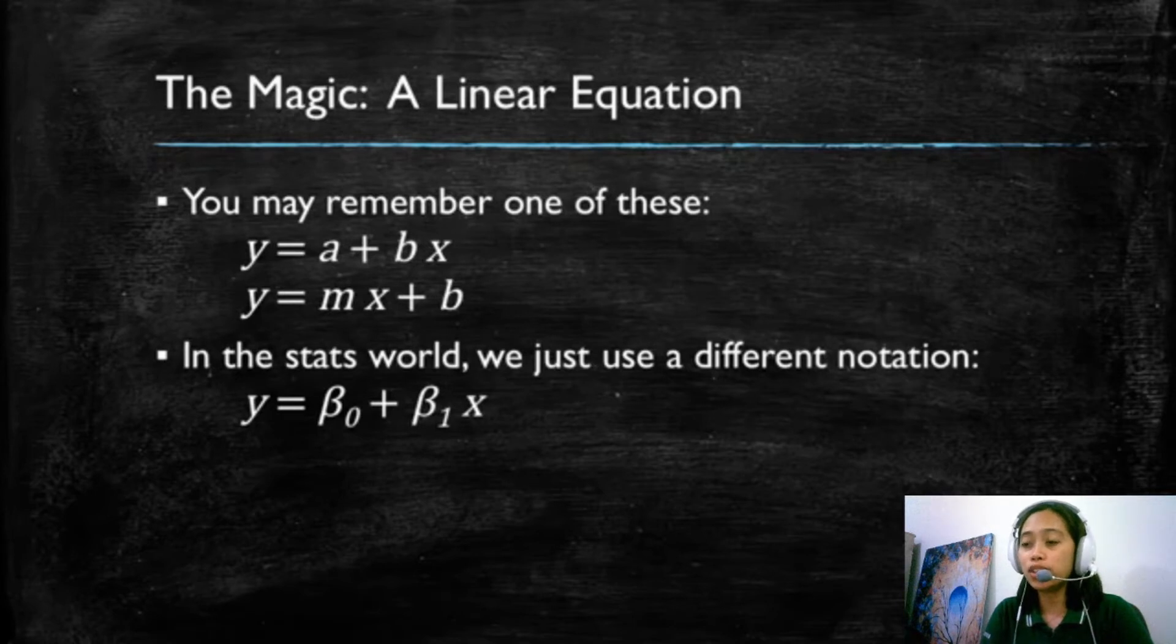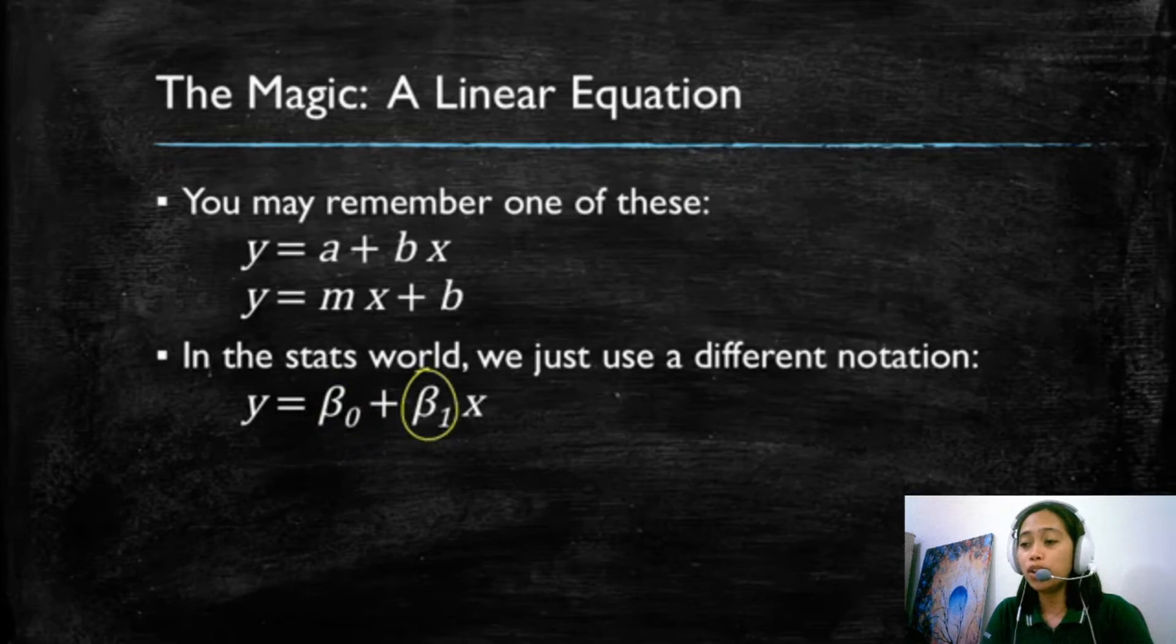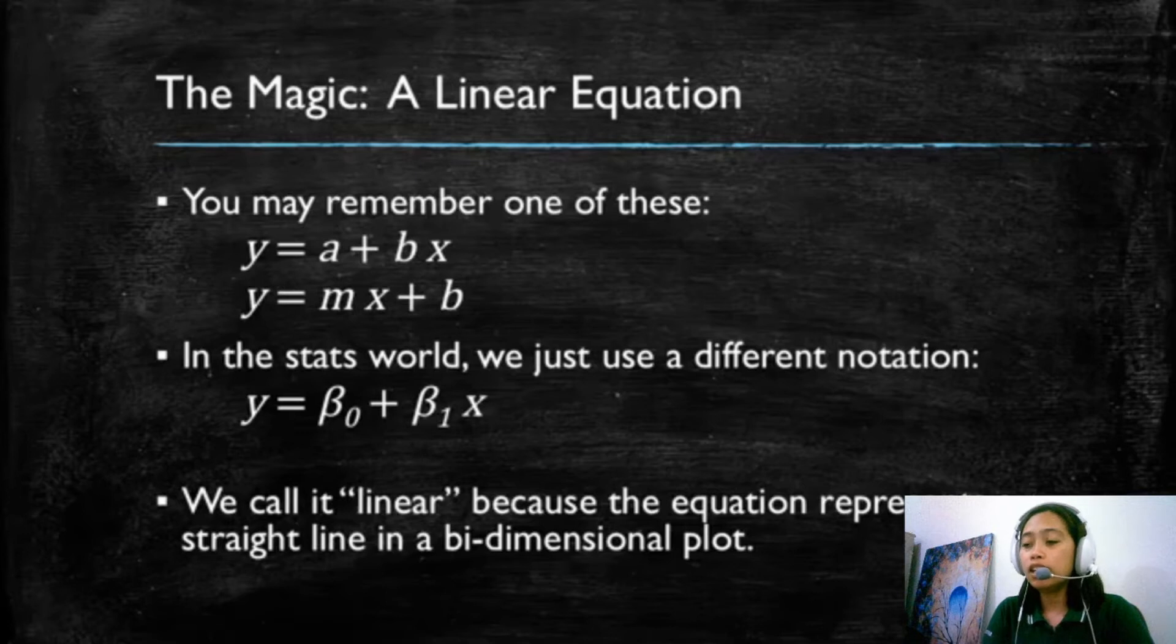In the statistics world, we like Greek letters and we are going to be using a slightly different notation. Our linear equation is going to have a beta zero term, which we're going to be calling the intercept or the constant. And the beta one, which is the term that multiplies the X and we're going to be calling the coefficient of X or the slope of X. And as a recap, we call these linear equations because they will appear as a straight line if we plot them in a two-dimensional plot.